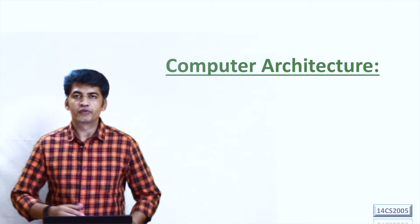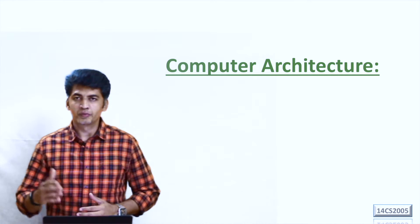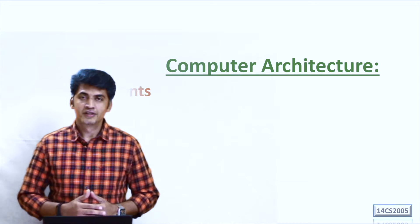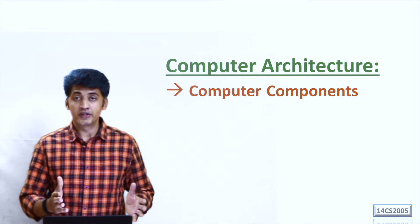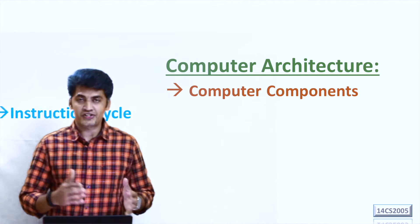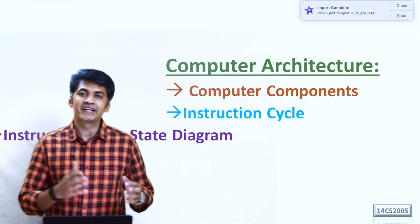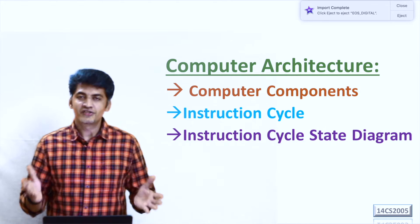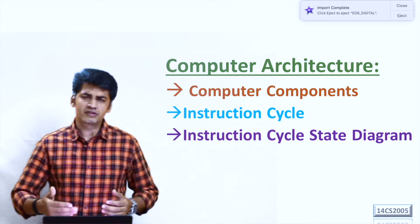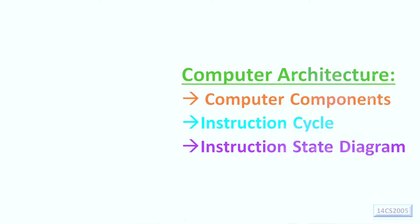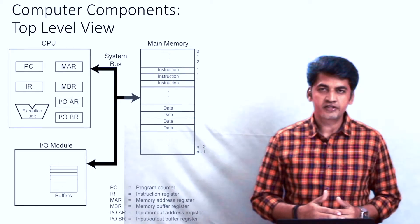Hi friends. In this video we are going to see three things in computer architecture: computer components, the instruction cycle, and the instruction cycle state diagram. We are going to discuss all three one by one. First we'll see computer components.